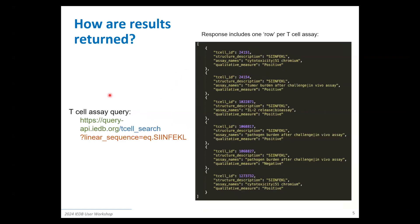That was the epitope endpoint. You can see we have very similar structures for T cell assays, and all of the endpoints are going to have very similar structures with the same search parameters for the most part, depending on how the data is structured within those different endpoints and search tables. You can see all the assays associated with that SINFECL linear sequence as well.